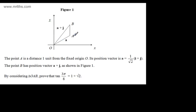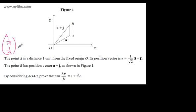If we look at B now, B is directly above A. All we've done is added 1 to the J component. You could write this in column form. For A, we've got 1 over root 2 and 1 over root 2. For B, we've got the I component of 1 over root 2, and the J component is 1 over root 2 plus 1.